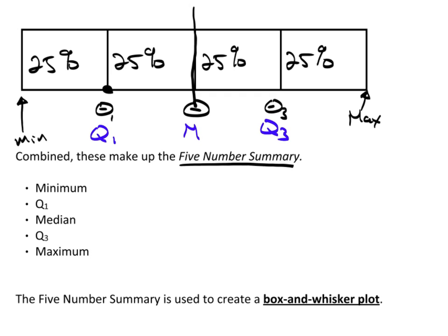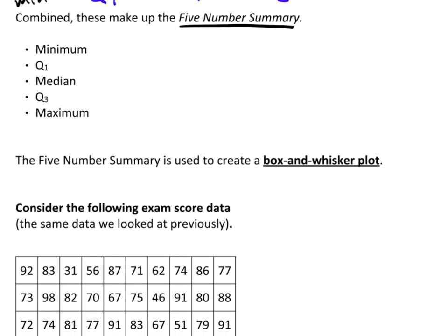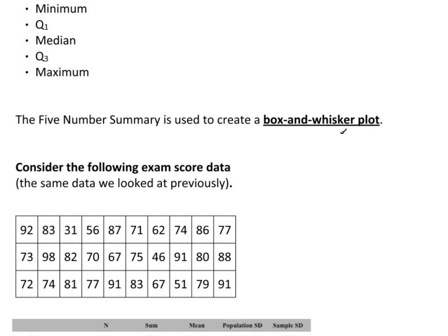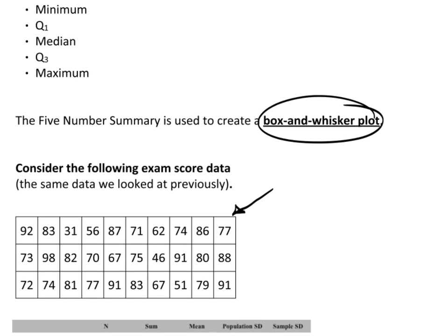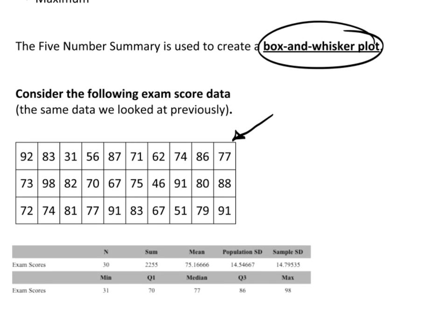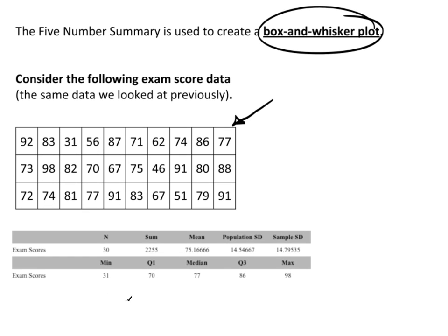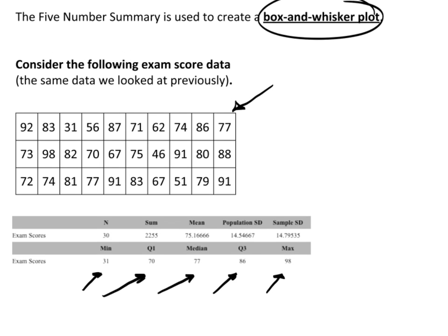What we most commonly use the five number summary for is to create what is known as a box and whisker plot. We'll consider the same exam data that we've looked at before — we've created histograms and frequency distribution tables with it. Here are the summary statistics from TC Stats: the minimum, Q1, the median, Q3, and the maximum — those values make up the five number summary which we use to create a box and whisker plot.